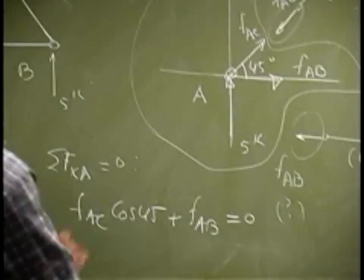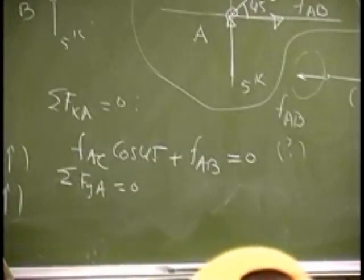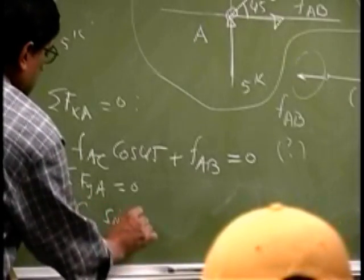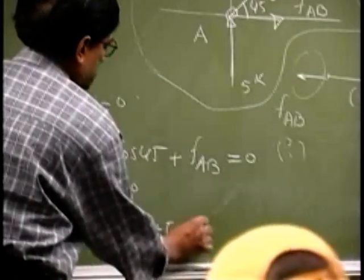Then we are going to sum the force at the same joint in Y direction. So now you get FAC cosine 45. So now you get FAC cosine 45 plus 5 equals 0.